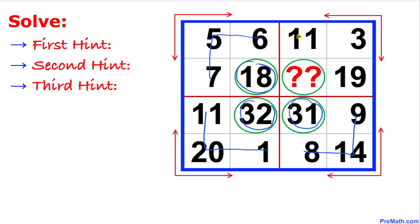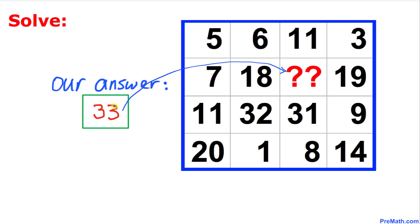So likewise we are going to add these three numbers: 11 plus 3 plus 19. And if we add them we are supposed to get 33. So thus our desired answer turns out to be 33.